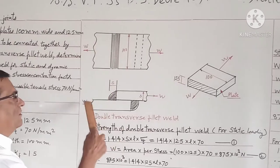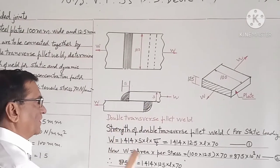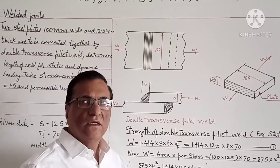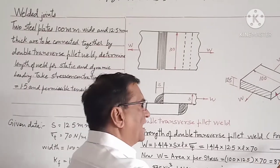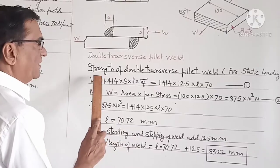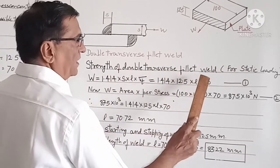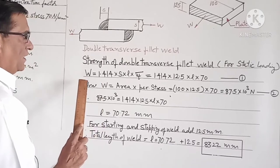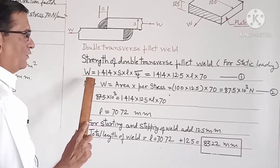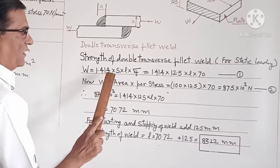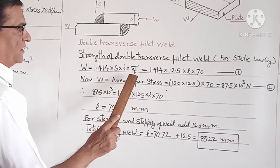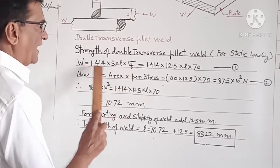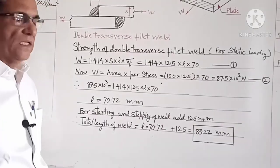Now this is the figure for the problem. We will first determine the length of weld for static loading. The strength of double transverse fillet weld for static loading is given by the equation: W is equal to 1.414 into S into L into sigma T. Putting the values of S and sigma T we get equation number 1.